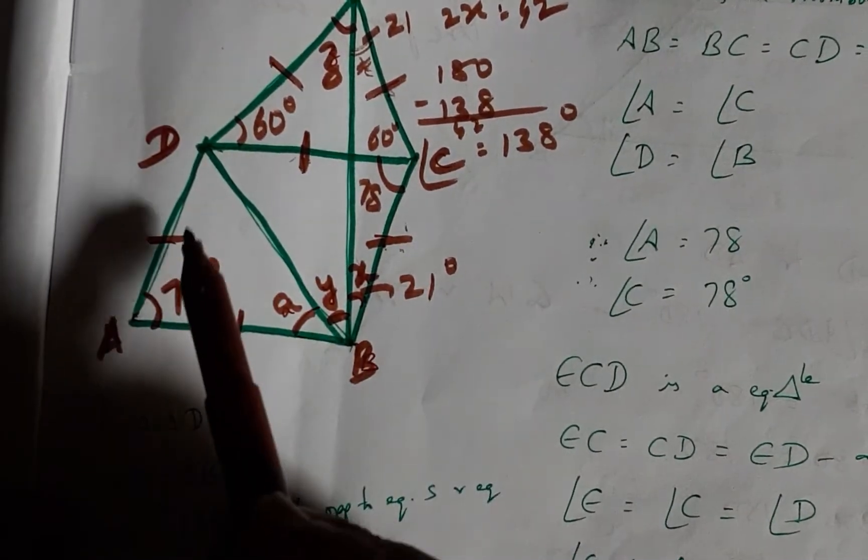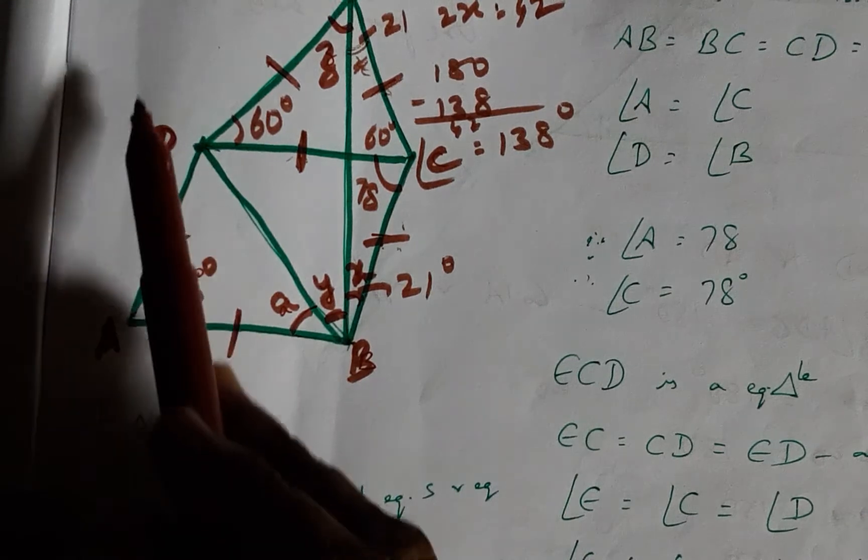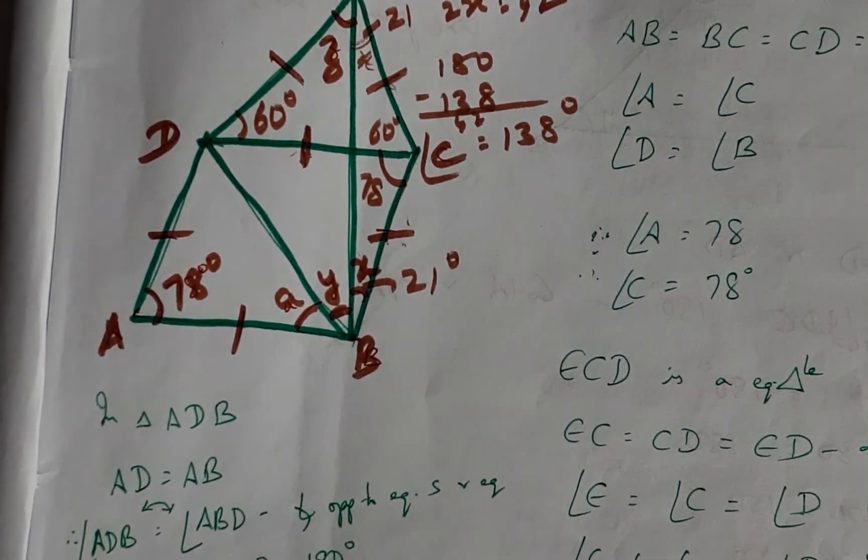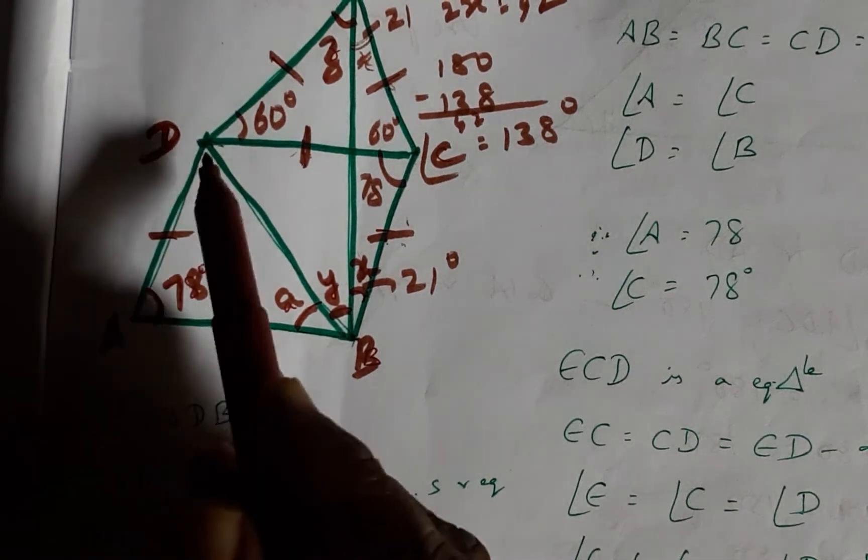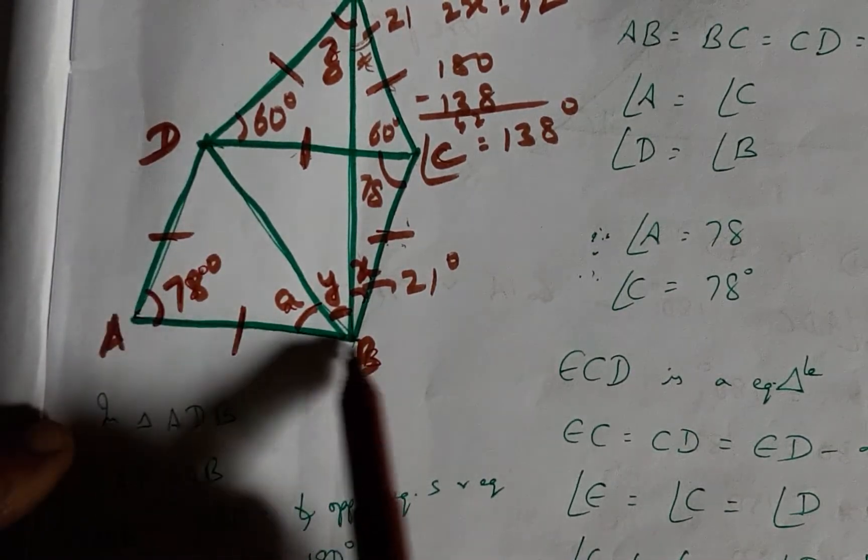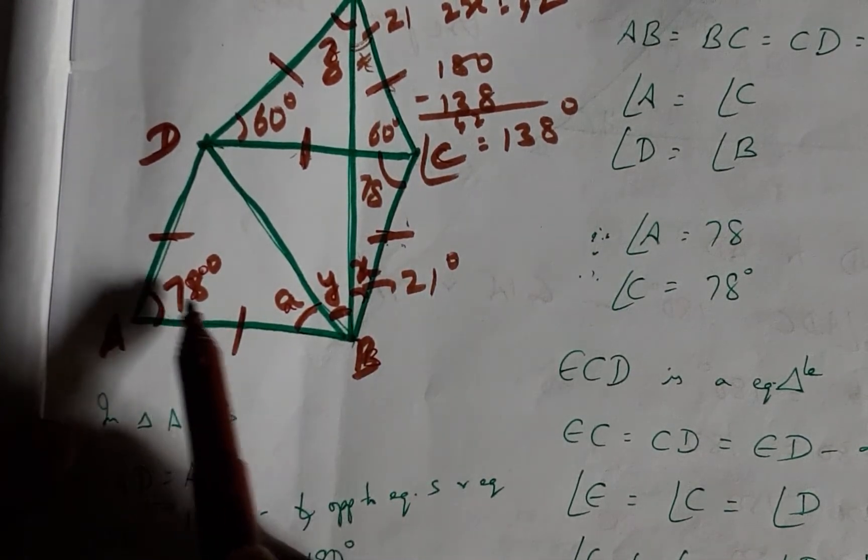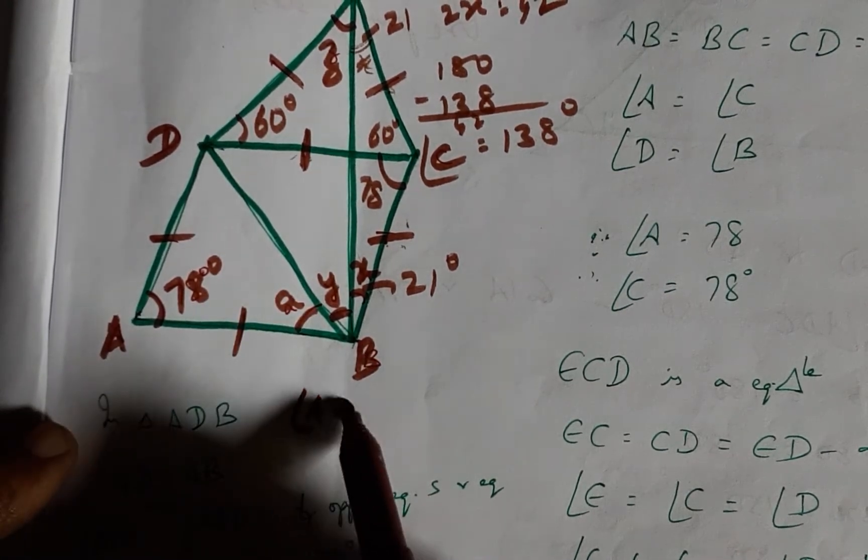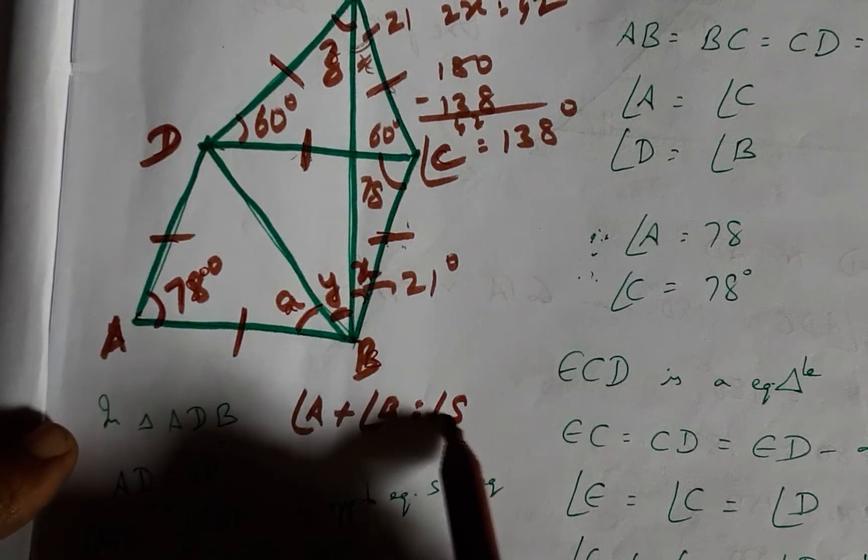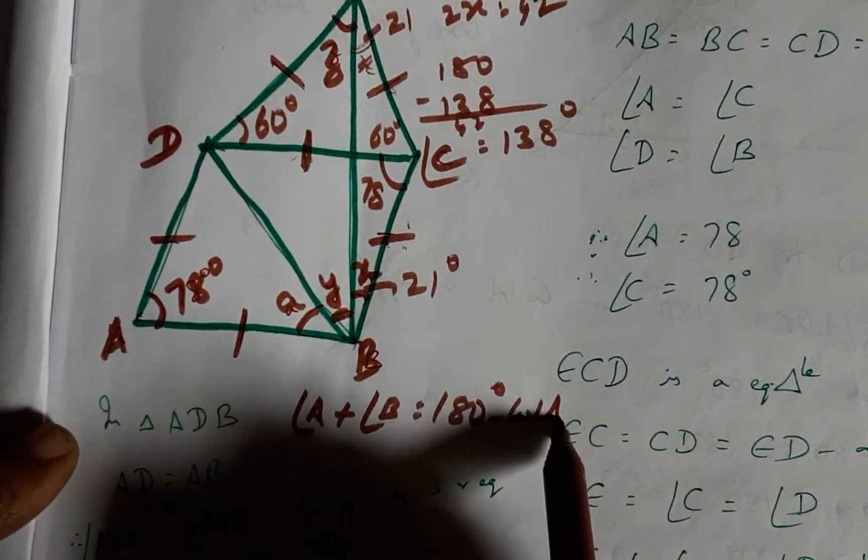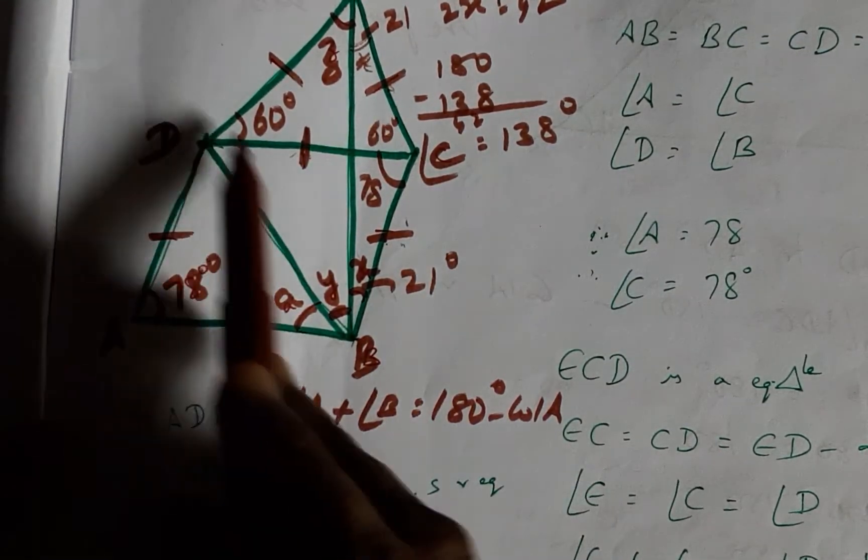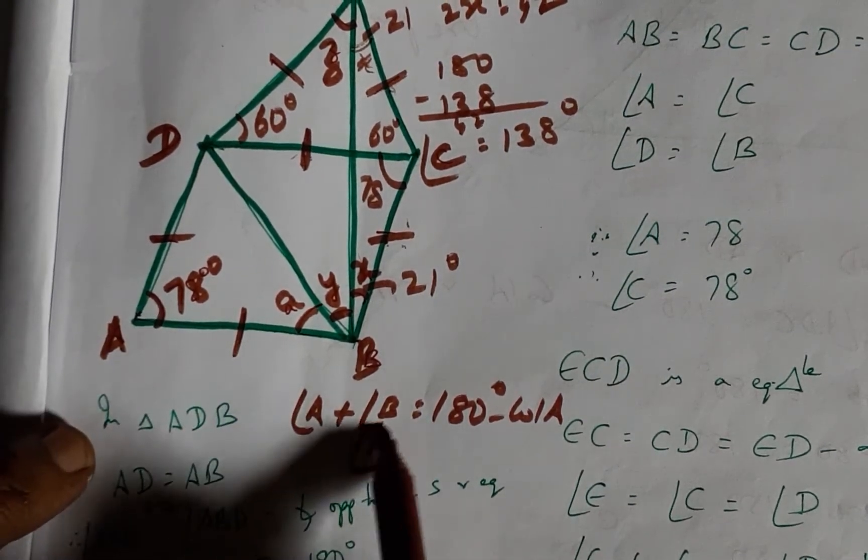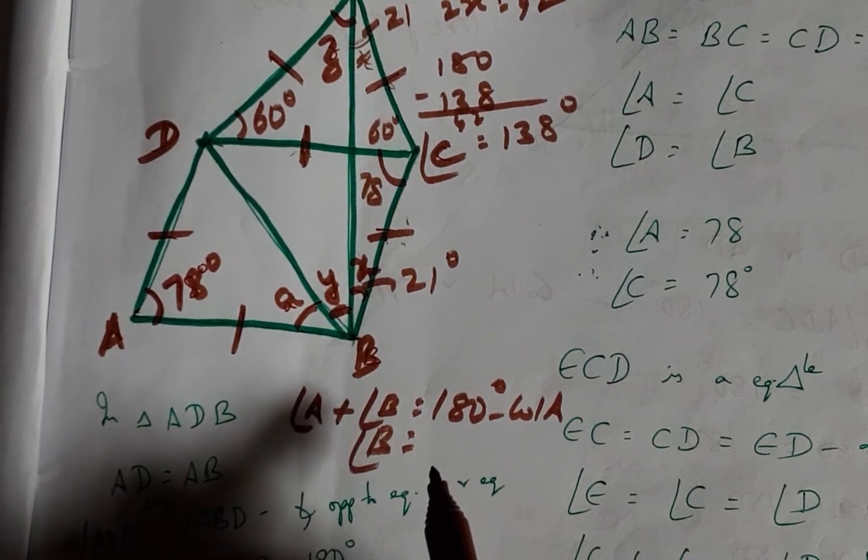Now, this being a rhombus and a parallelogram, AD parallel to BC with transversal AB, we have angles A and B. Sum of angle A plus angle B is supplementary, being co-interior angles of AD parallel BC with transversal AB. Angle A being 78, now B will be 102 degrees.